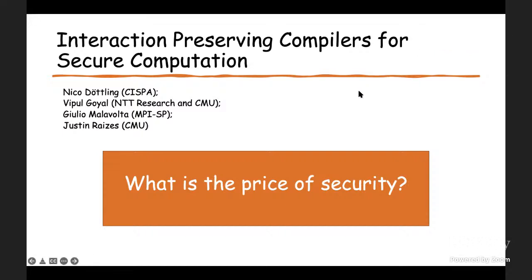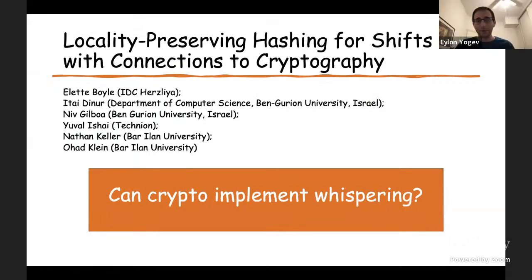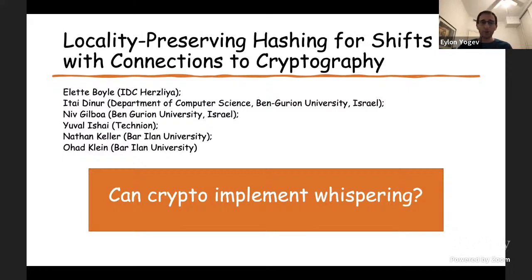Paper number two is locality preserving hashing for shifts, with connections to cryptography. These are hash functions that maintain some locality property, allowing you to encrypt a message such that only people near you can decrypt it. The question is: can crypto mathematically implement whispering — that I whisper something and only somebody near me can hear?